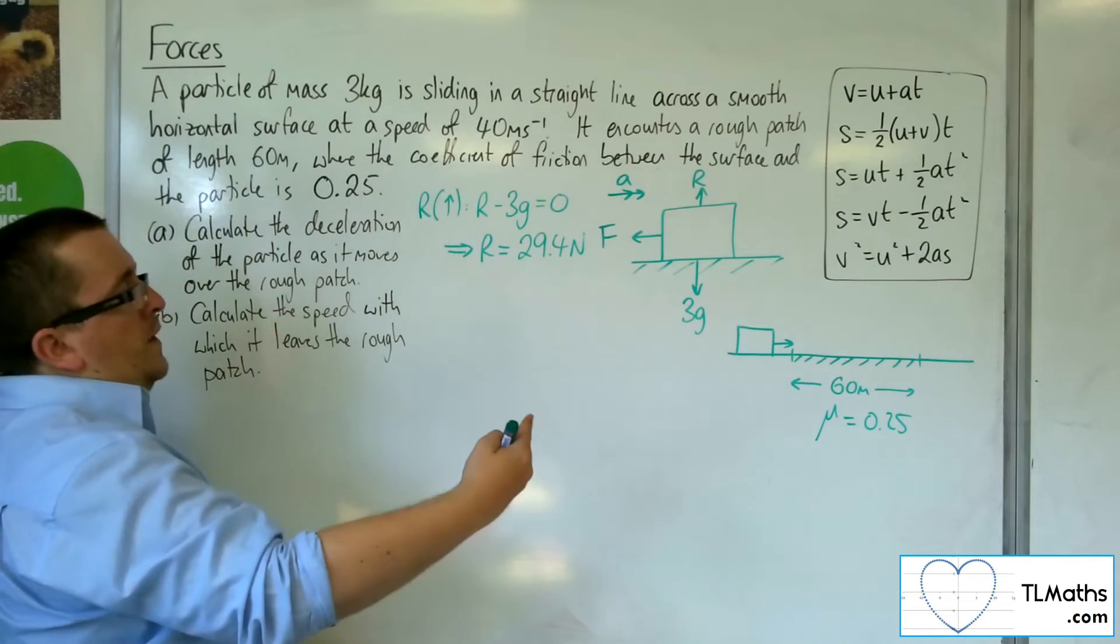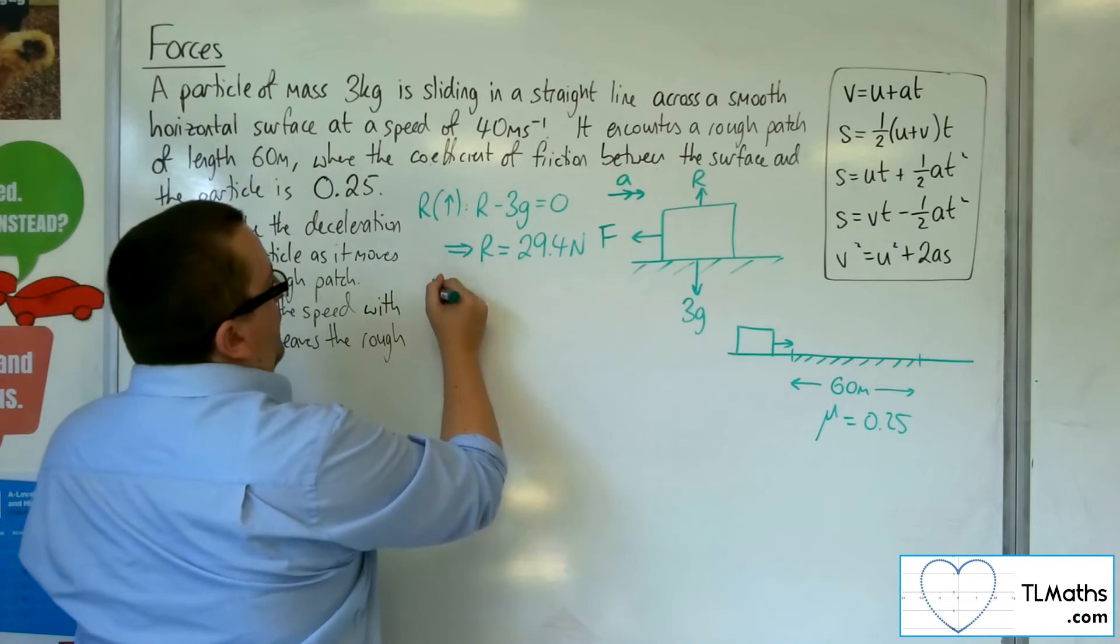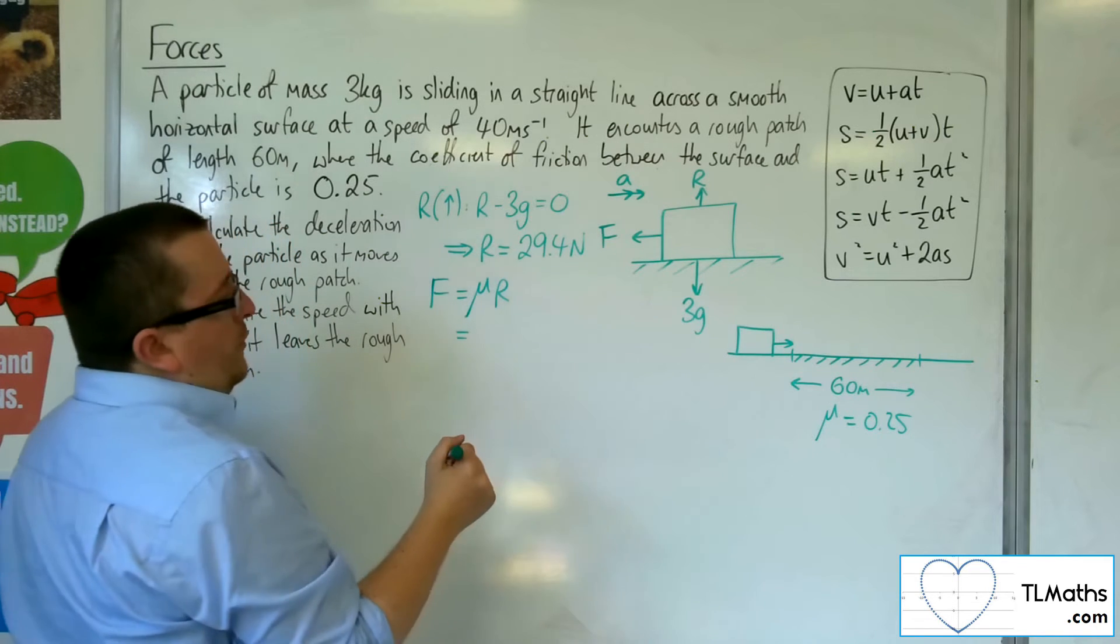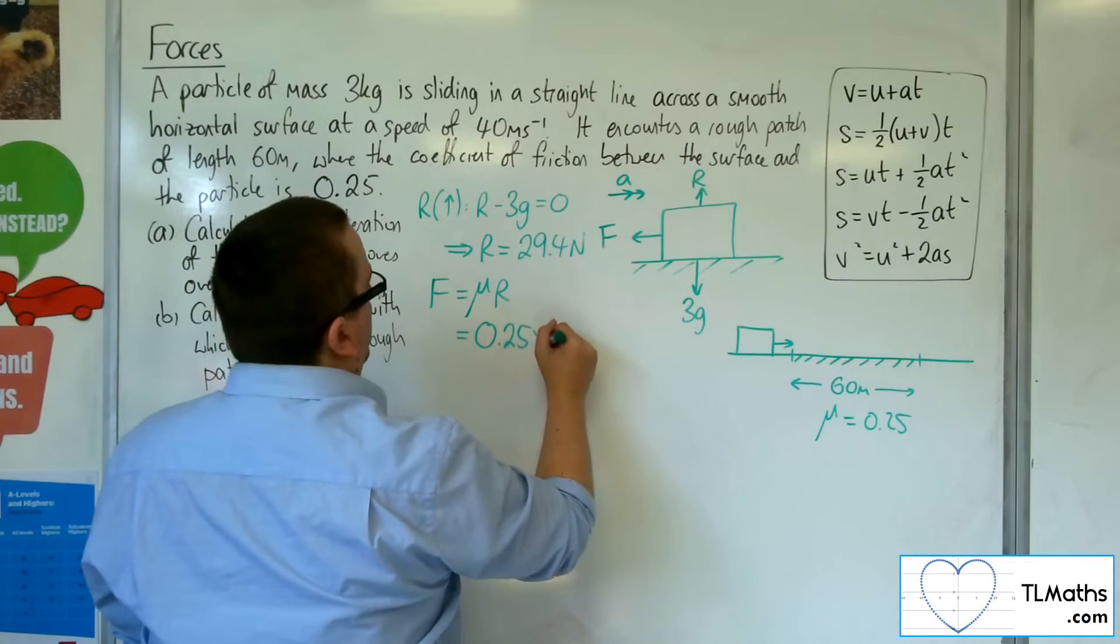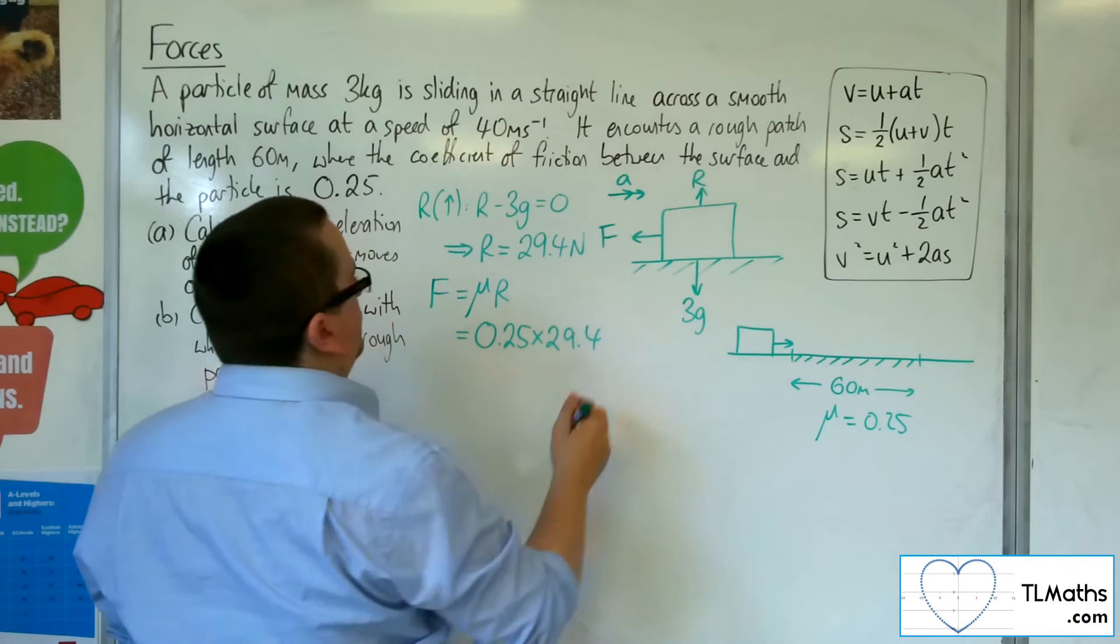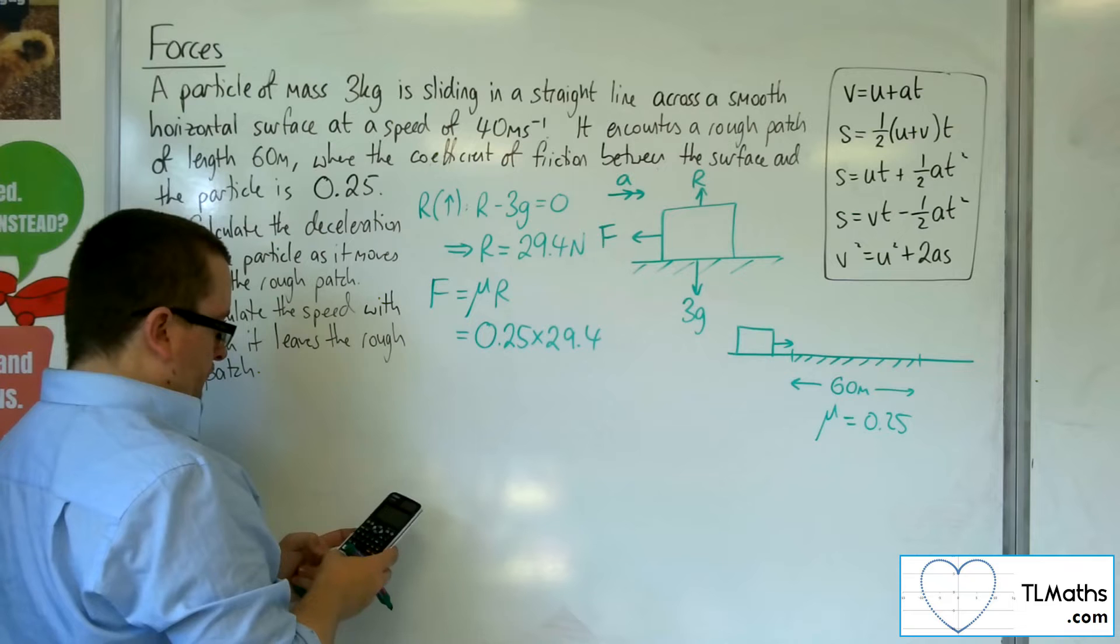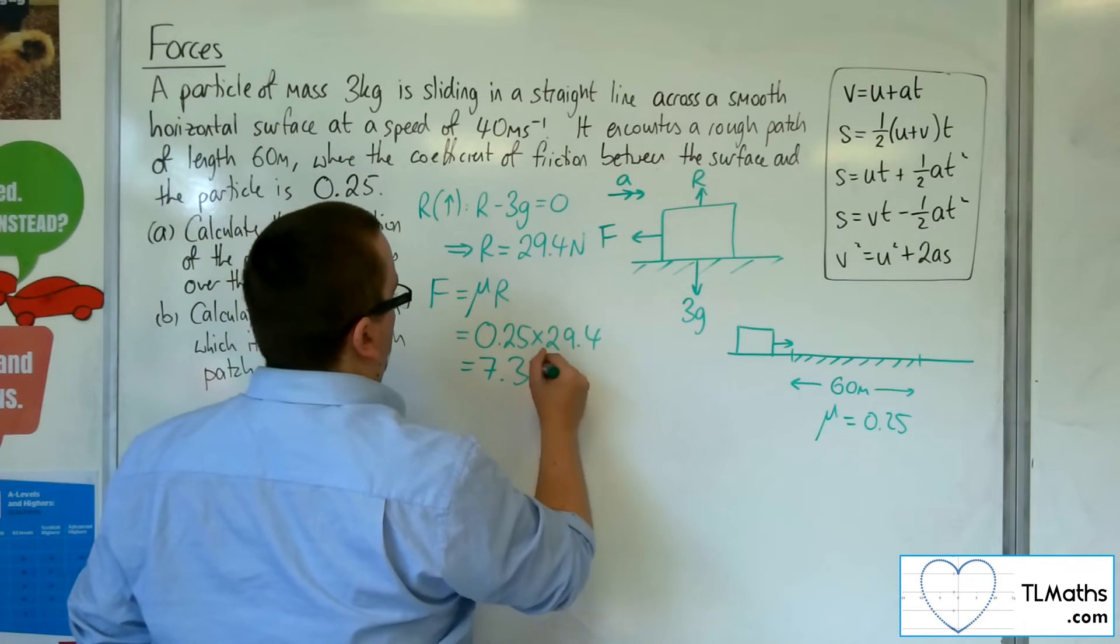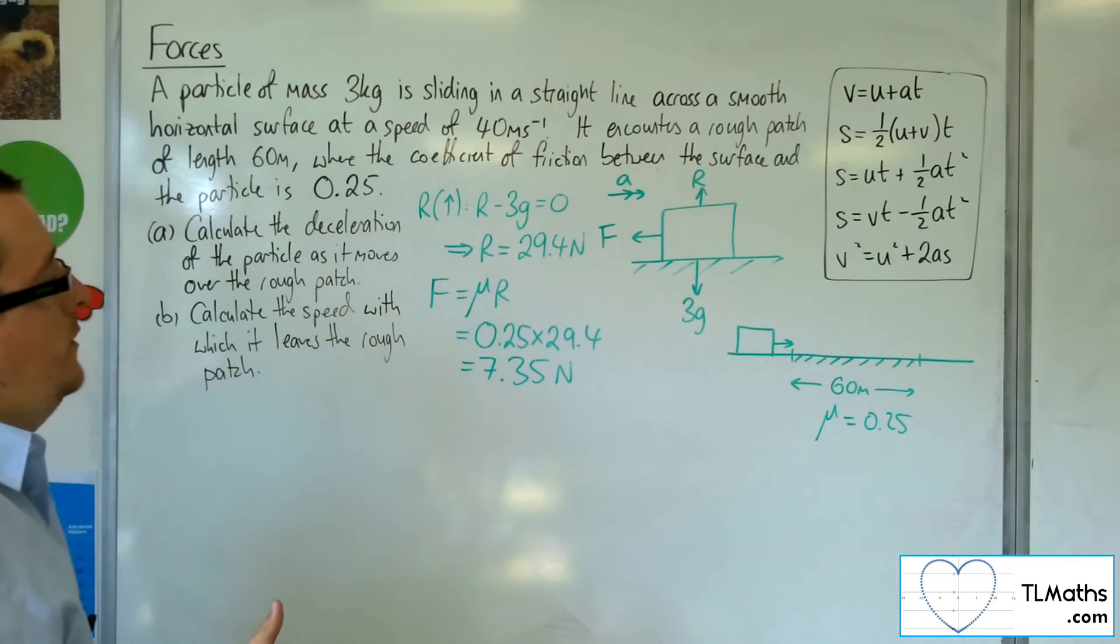Now, as we've overcome the frictional force, F is going to be equal to mu times R. So the frictional force is 0.25 times 29.4, which is 7.35. So the frictional force is 7.35 newtons.